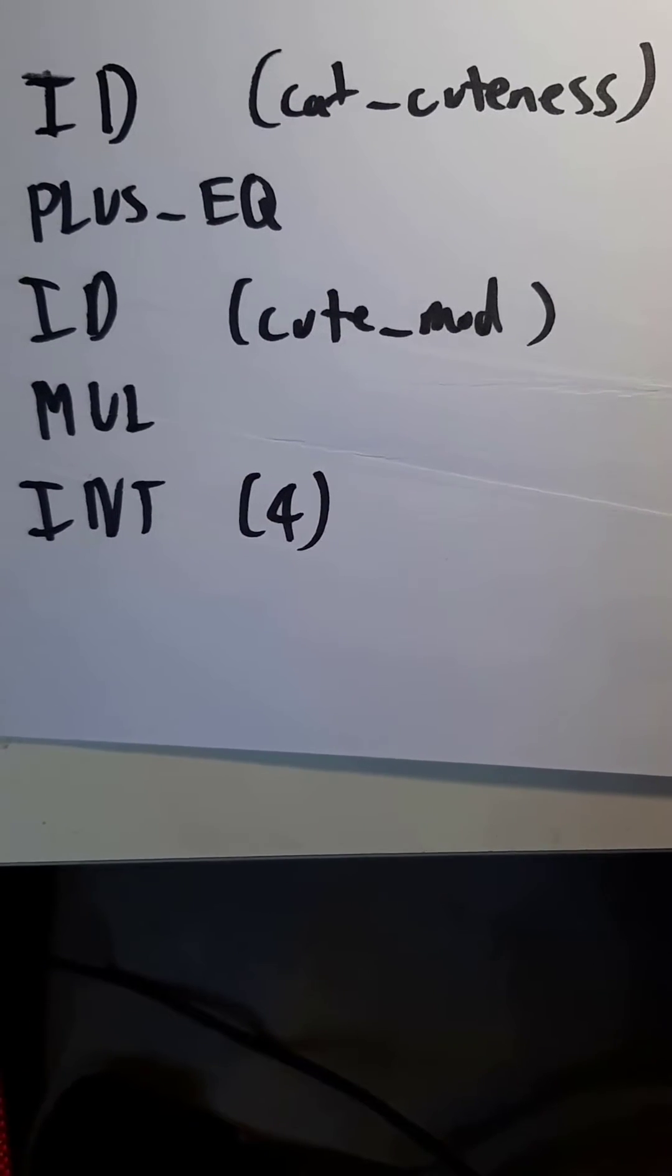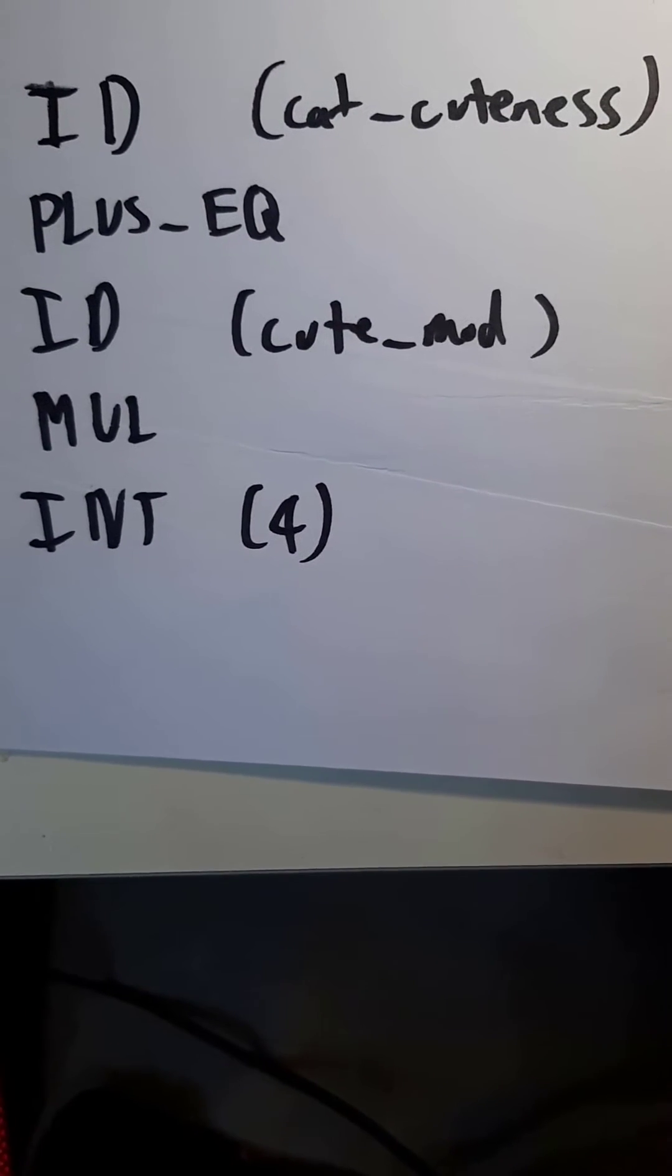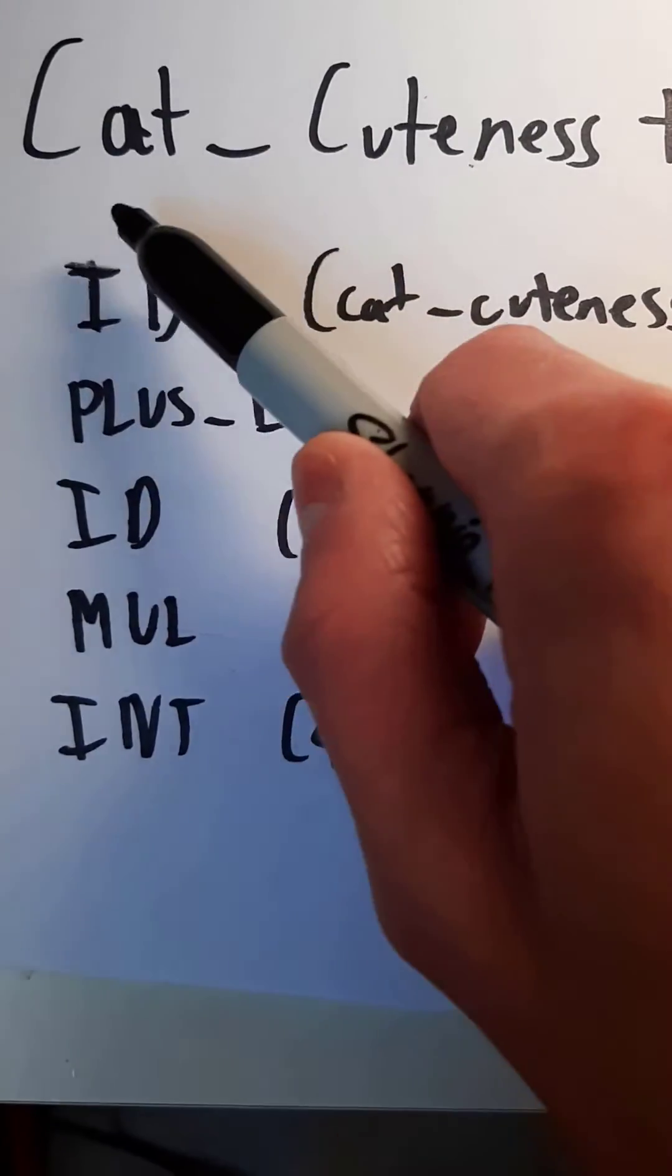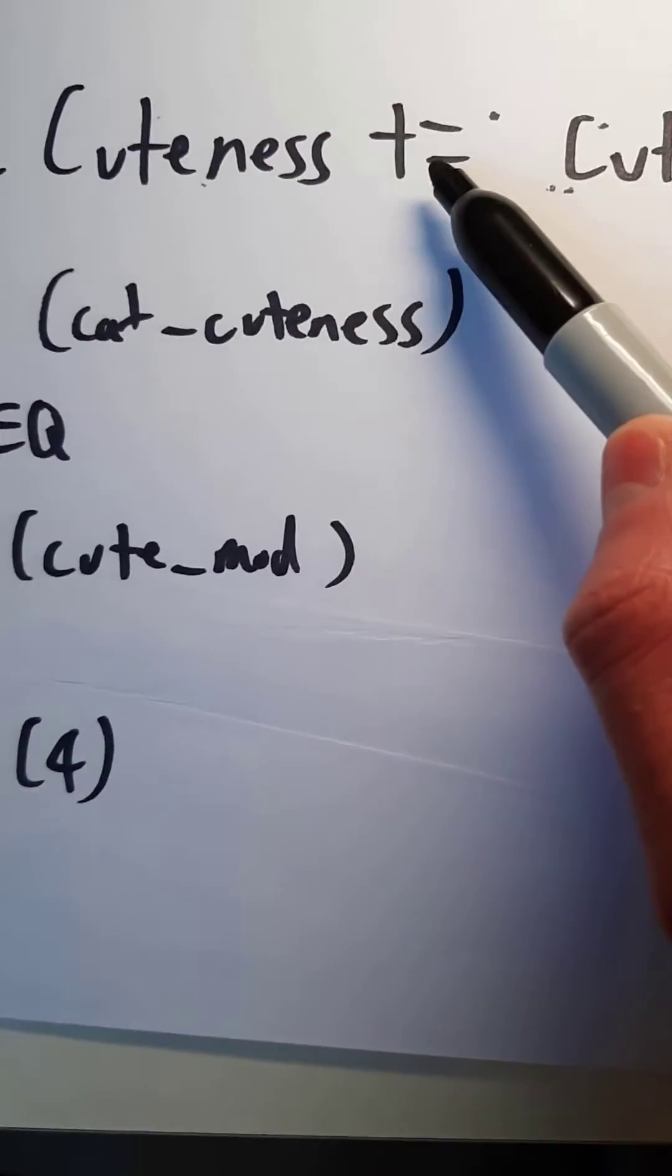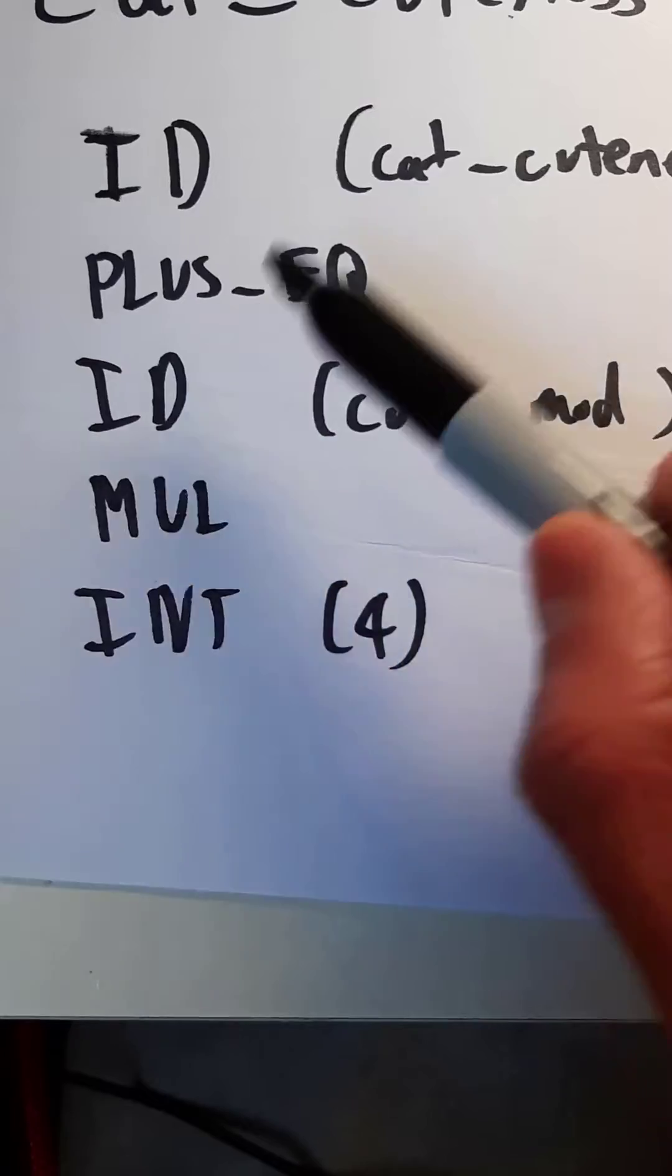Tokenization takes our text and turns it into tokens which are easier to process and compare, such as our cat_cuteness string becomes an identifier. Our plus equals two characters becomes a single token.